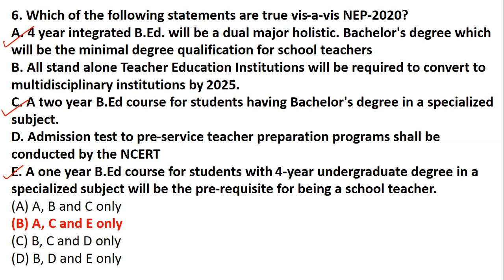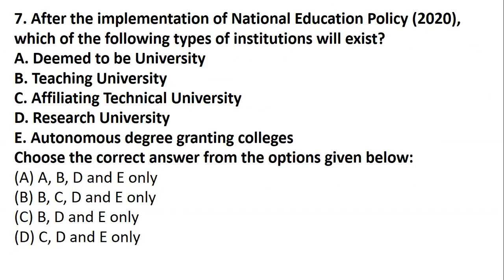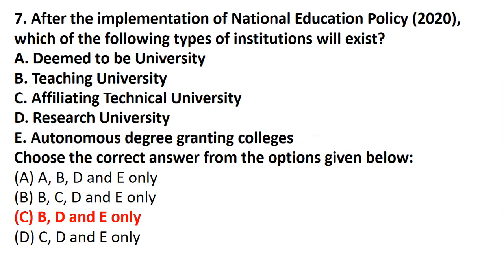Question seven: after the implementation of National Education Policy 2020, which types of institutions will exist? The options include teaching universities, research universities, affiliated universities, technical affiliated universities, autonomous universities, and autonomous degree-granting colleges. The educational institutions that will exist under NEP 2020 are teaching universities, research universities, and autonomous degree-granting colleges — that is, options B, D, and E.